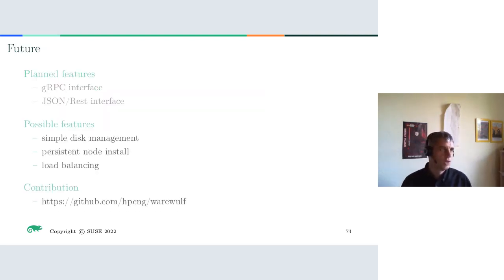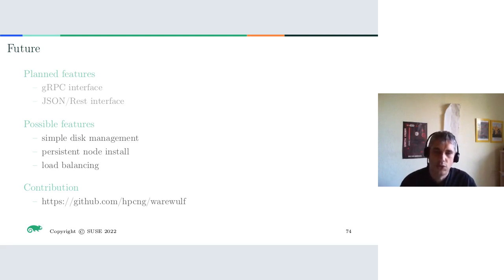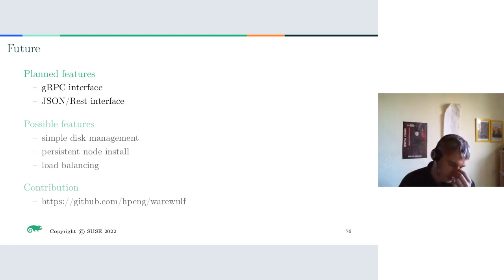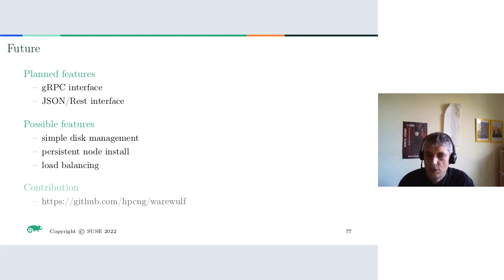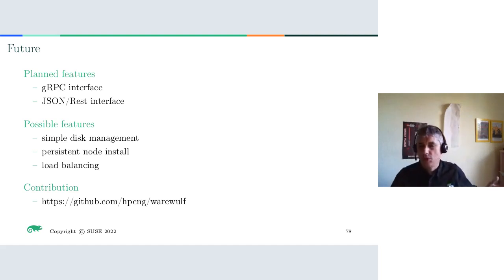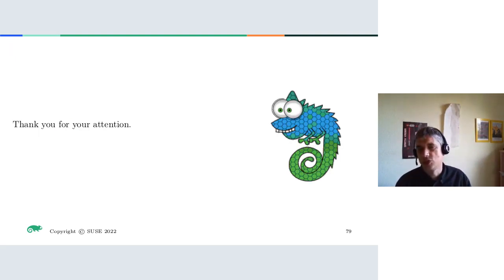I've talked about what's in version 4.3. Version 4.4 will hopefully be released at Supercomputing in November. New features include a gRPC and JSON interface so you can configure and query values programmatically. Possible future features planned for later releases include simple disk management and persistent node installation. You can always contribute — it's available in Leap and Tumbleweed. Thank you for your attention — any questions?